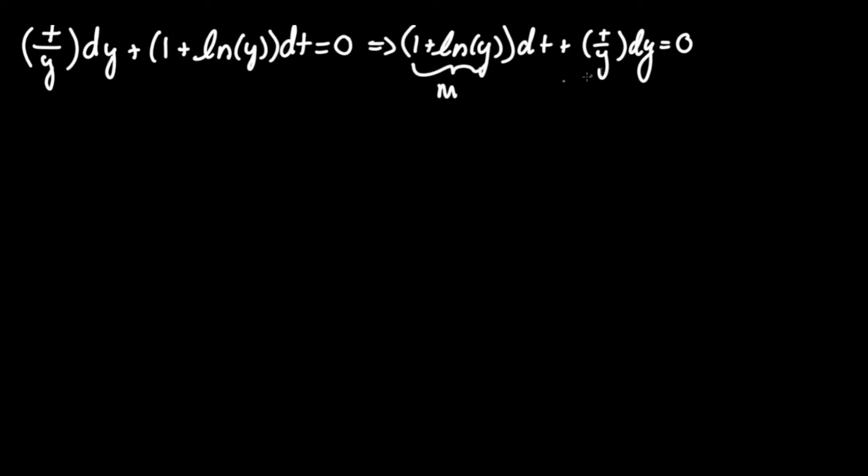Now let's mark the m term and the n term in front of dt dy and to prove that this is an exact equation all we do is take the partial derivative of m with respect to the dependent variable y which is also equivalent to del m del y and we can see here the derivative of one is zero and the derivative of ln y becomes one over y since it's with respect to y.